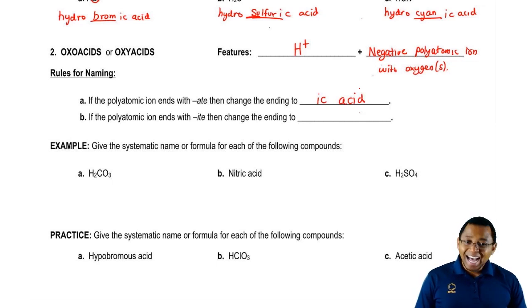If the polyatomic ion ends with -ite, then we change the -ite ending to -ous acid.